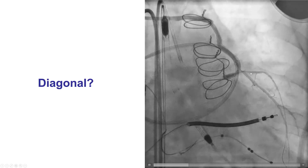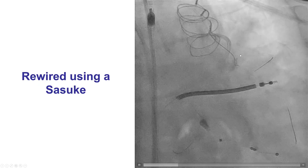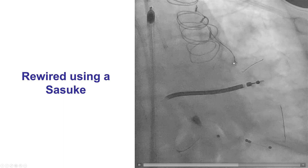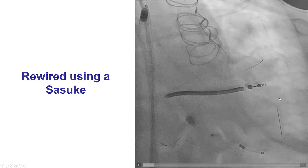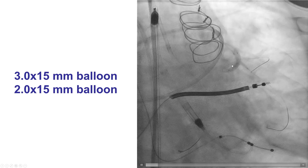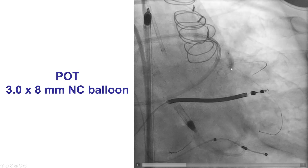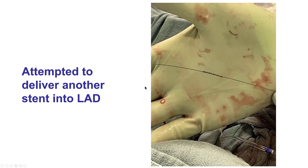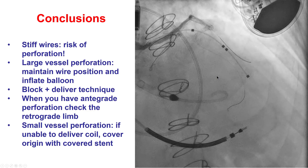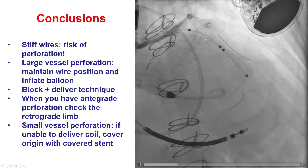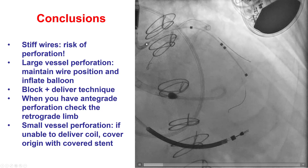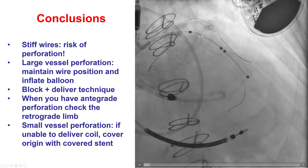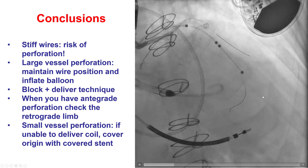There was some pinching of the origin of the diagonal branch, which was addressed using a Sasuke dual-lumen microcatheter for rewiring into the diagonal branch. We then removed the jailed guide wire from the diagonal and performed kissing balloon inflation along both limbs of the distal anastomosis of the vein graft, followed by proximal optimization with a 3.0 by 8 millimeter NC balloon. We attempted to deliver another stent further down into the LAD, but had difficulty — the stent came off the balloon shaft, though fortunately it was able to be removed from the guide. We decided not to attempt further PCI. Both perforations were sealed, and the patient had an uneventful recovery.